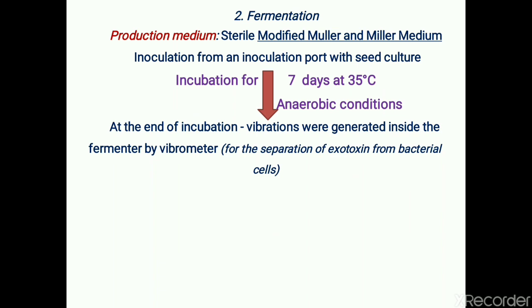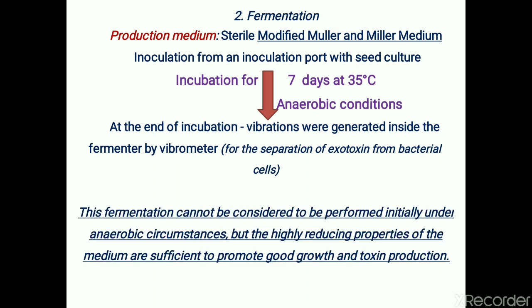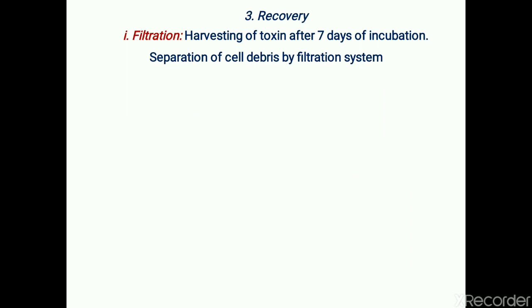At the end of the incubation period, vibrations are allowed to be generated inside the fermenter by an equipment called a vibrometer. These vibrations are essential for the separation of exotoxin from the bacterial cells. Tetanospasmin is liberated outside the cell but may sometimes remain bound to the outermost structure of the cell; therefore vibrations are introduced to liberate this exotoxin into the fermentation broth. The highly reducing properties of the medium are sufficient to provide good growth and toxin production.